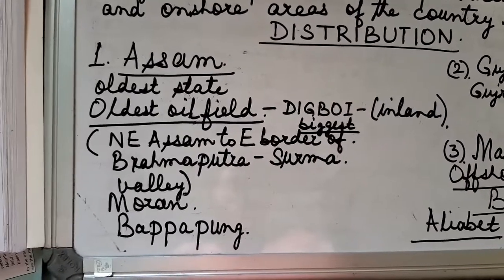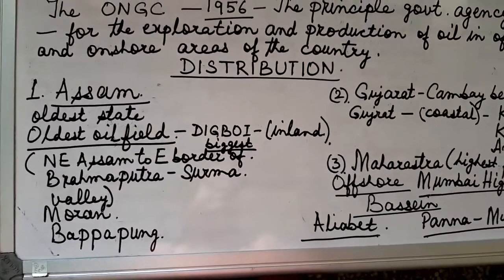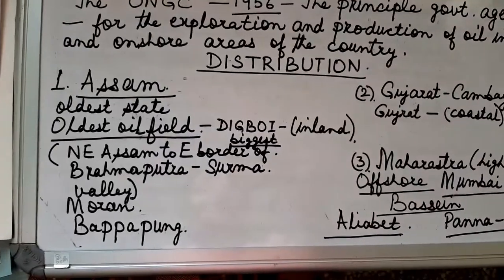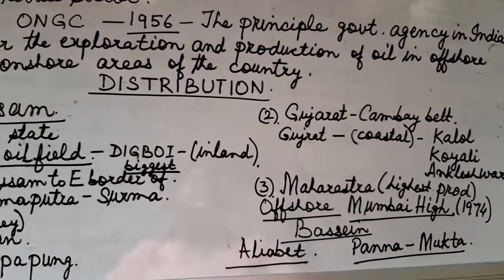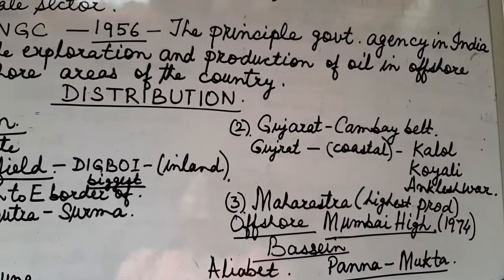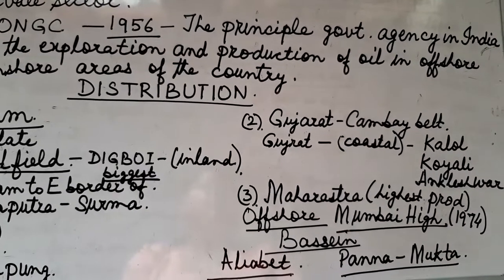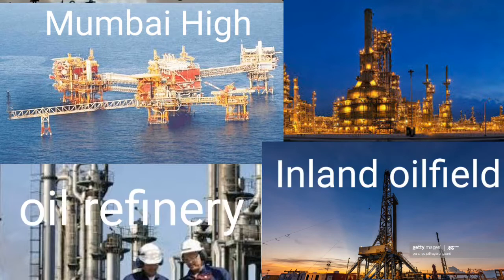Other oil fields in Assam include Moran and Bapapung. We should learn at least three oil fields in each of the three leading states: Maharashtra (the leading state in oil), Assam (the oldest state), and Gujarat. In the Cambay belt of Gujarat, coastal oil fields include Kalol, Koyali, and Ankleshwar.